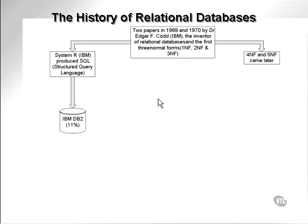IBM really produced the first relational database called System R. System R effectively allowed the creation of SQL — the Structured Query Language. IBM currently markets a relational database called DB2, and they have 11% of the market.